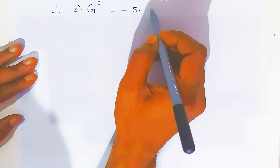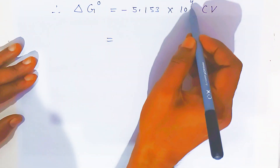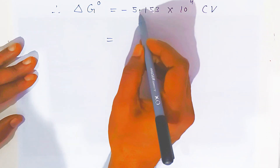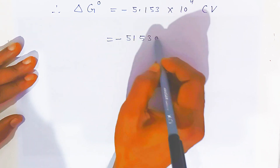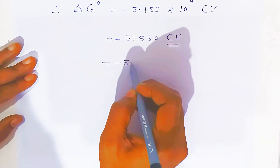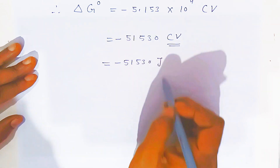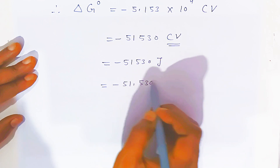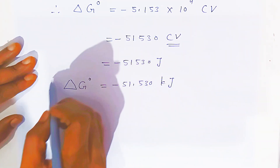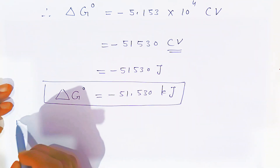Putting this back: delta G° equals minus 5.153 times 10 to the power 4 coulomb-volts, which equals minus 51530 joules. Converting to kilojoules by dividing by 1000, we get delta G° equals minus 51.530 kilojoules. This is the standard change in Gibbs energy.